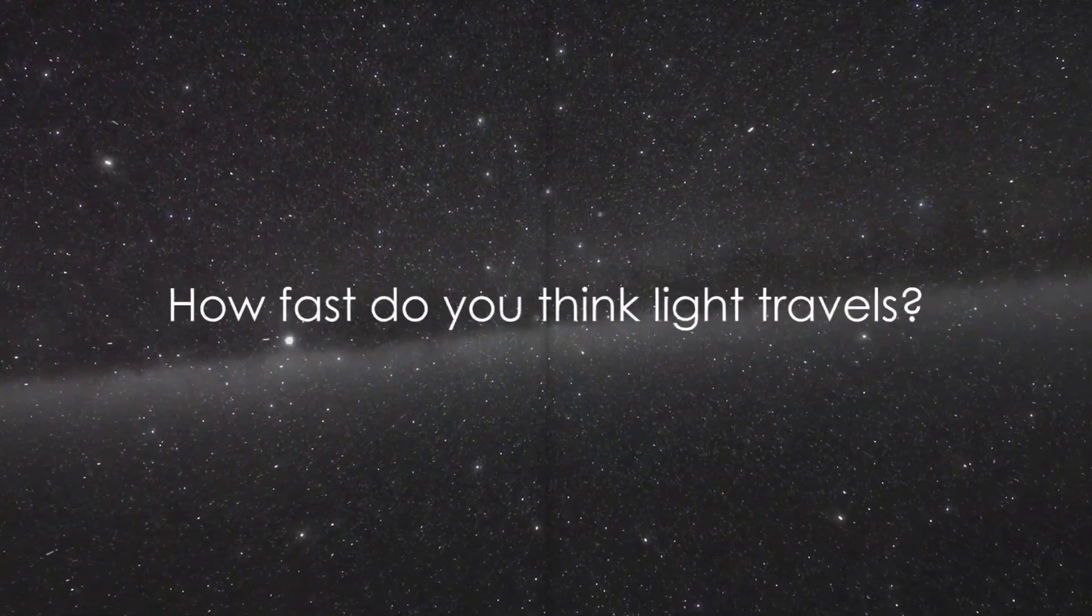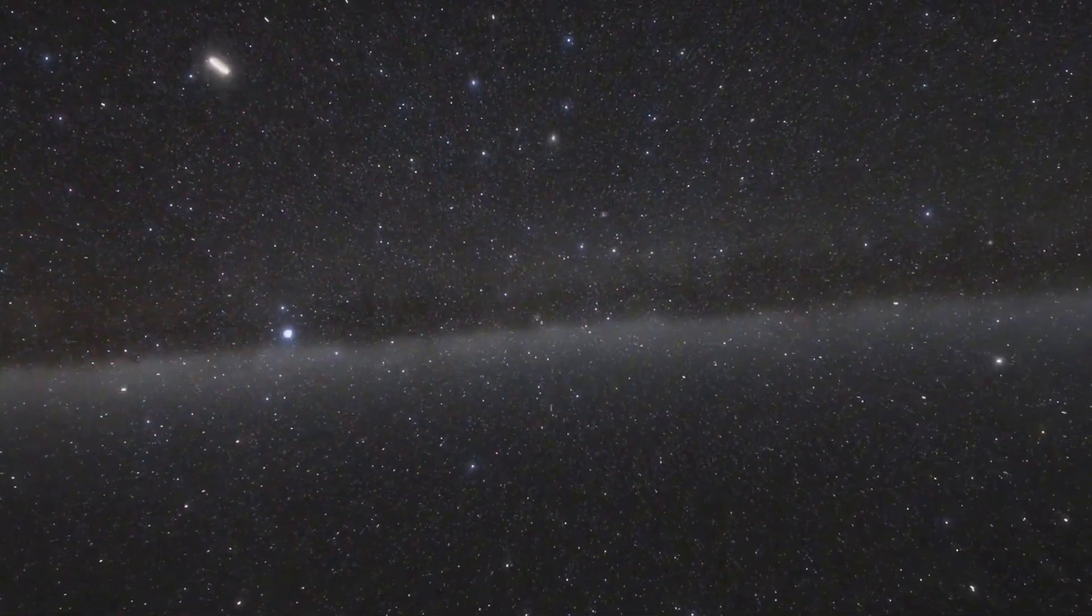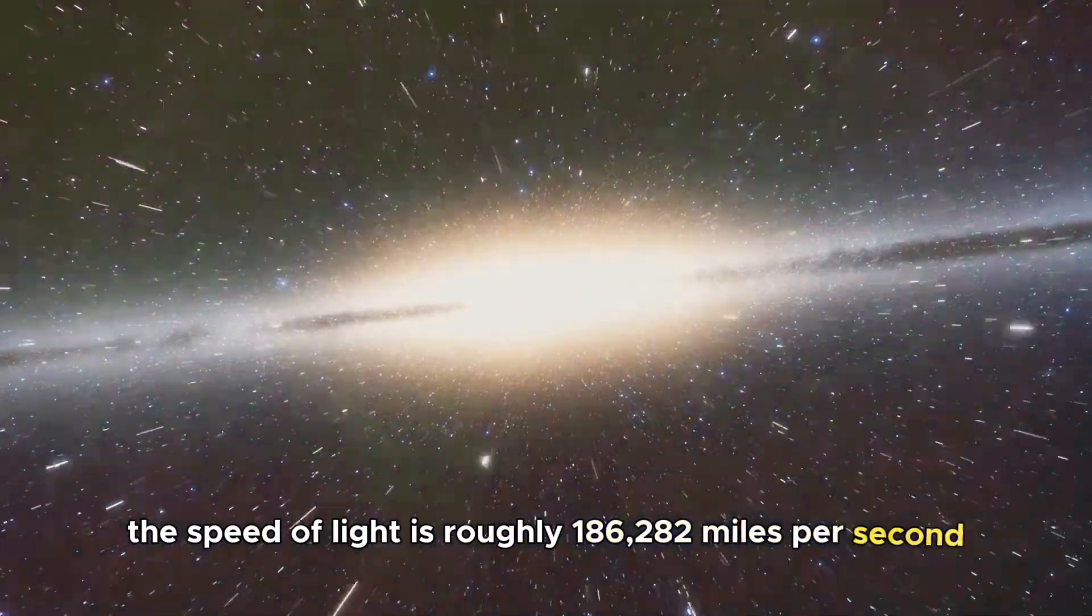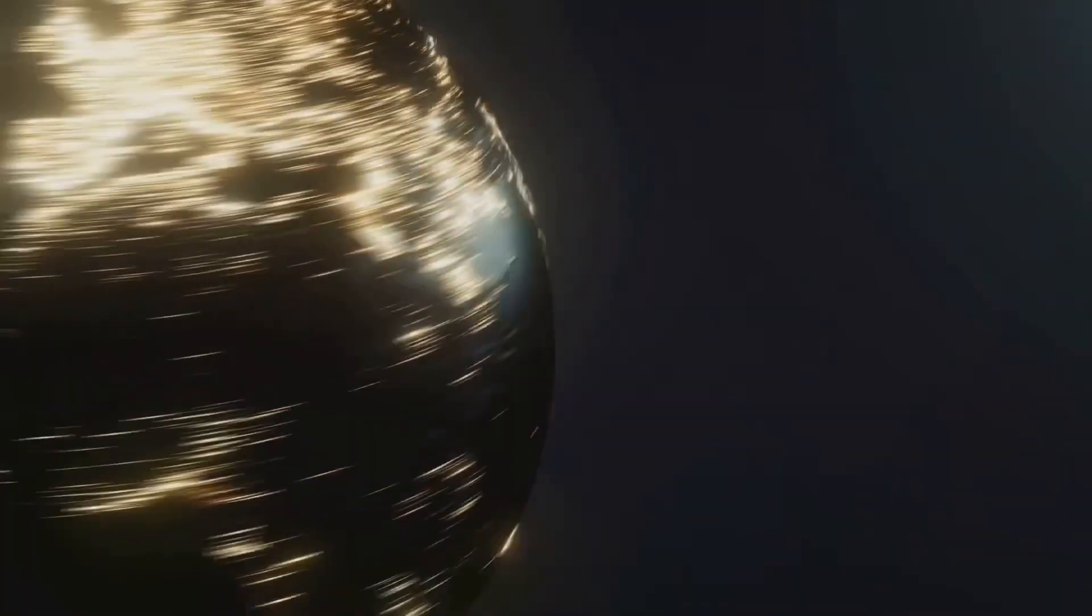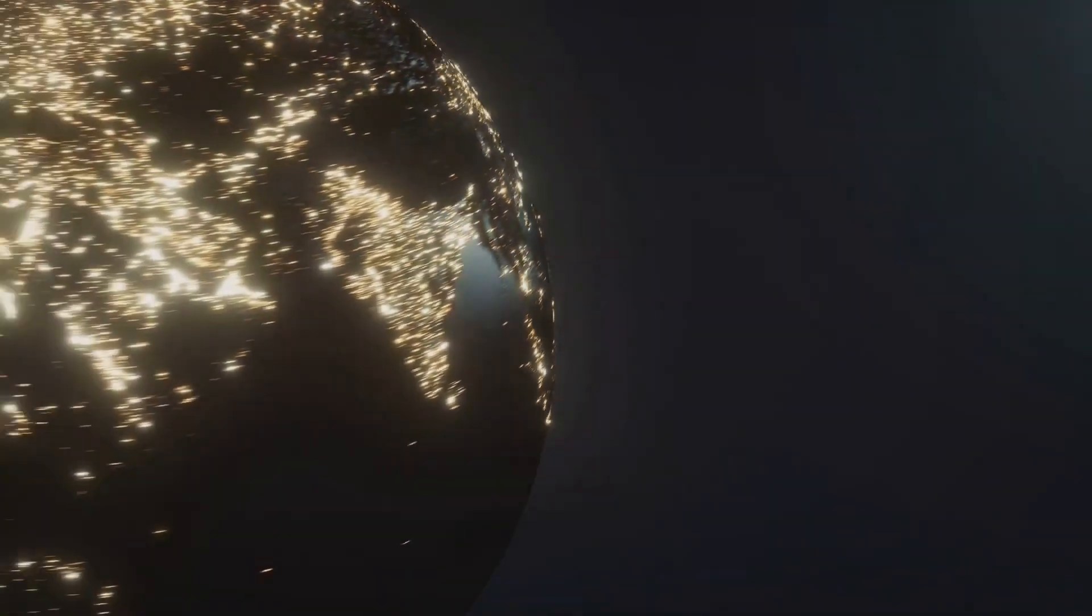How fast do you think light travels? It's not an easy question to visualize, but let's give it a shot. The speed of light is roughly 186,282 miles per second. Yes, you heard it right. Per second. It's so fast that if you blink, you would have missed it traveling more than half the way around the globe.